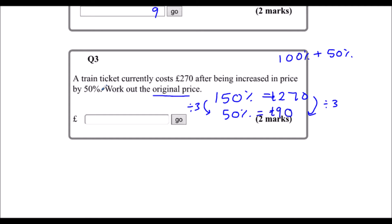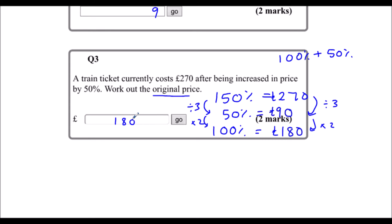So we know the increase was 90 pounds. 100% is either 150% take away 50%, or 2 lots of 50%, which makes 180. So the original price was 180 pounds. And if we add on 50% to 180 pounds, we get 270 pounds.